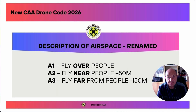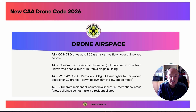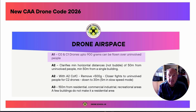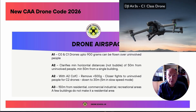The description of airspace has been renamed. A1 is flying over people; A2 is flying near people with a minimum separation of 50 metres; and A3 is flying far from people with a minimum separation of 150 metres. When you relate A1 to the C0/UK0 or C1/UK1 drone classifications, it starts to make sense. In A1, C0 and C1 drones up to 900 grams can be flown over uninvolved people. This is a major change — the A1 category was previously only for C0 drones under 250 grams. It is now possible to fly a C1 drone like the Air 3S in the A1 category from January 1st 2026.